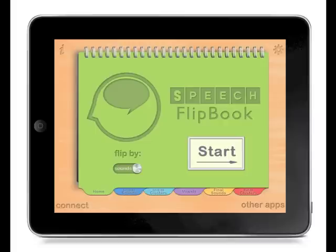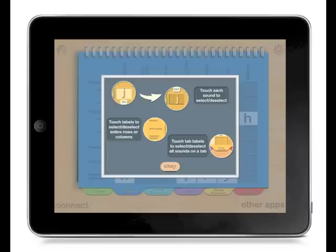First, select the sounds you wish to include by pressing on each of the five sound tabs and touching the sounds to select or deselect. The first time you use the app, you'll see a key of how to select sounds.